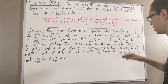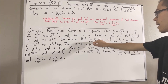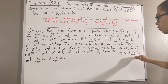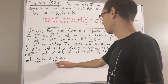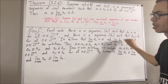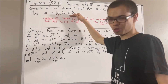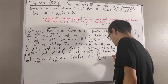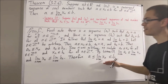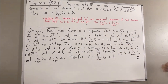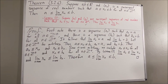Now we see that a is equal to the limit of an, which is less than or equal to the limit of xn, which is less than or equal to the limit of bn, which is equal to b. So this tells us that a is less than or equal to the limit of xn is less than or equal to b, and that is exactly what we wanted to prove. So this completes the proof. That's pretty much it for this video.